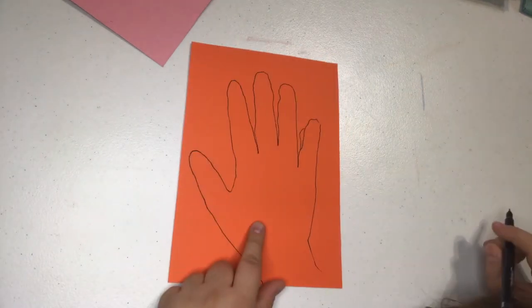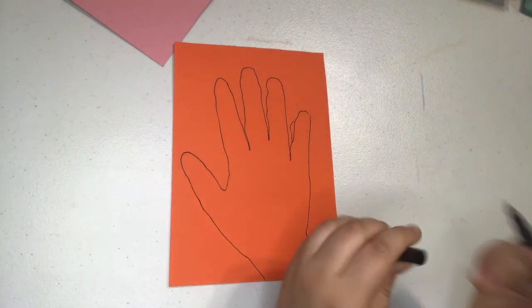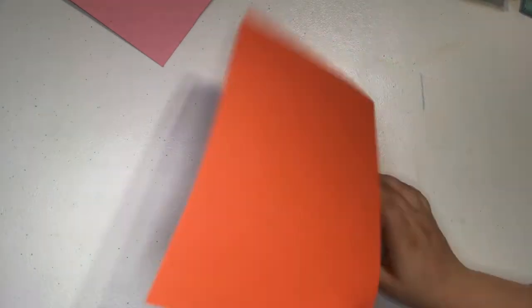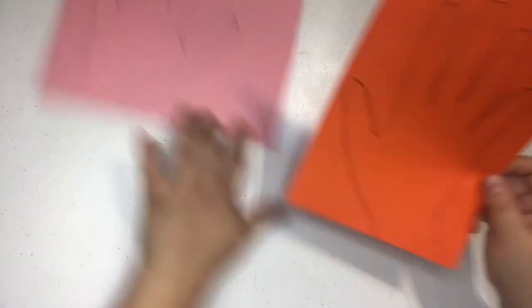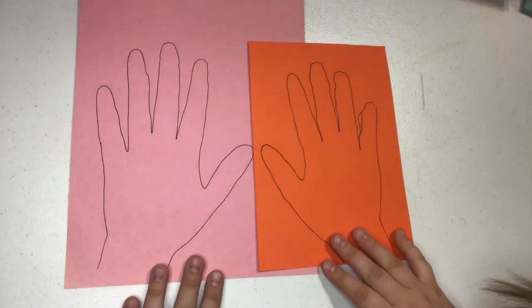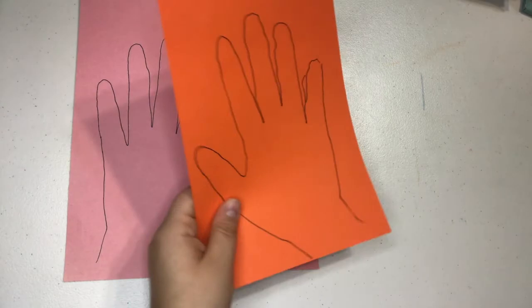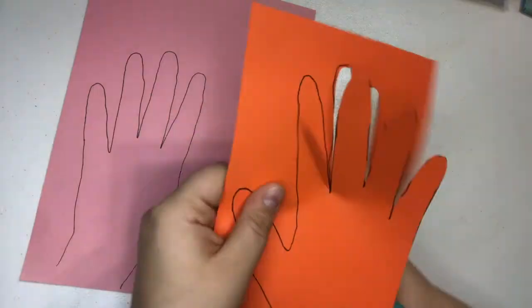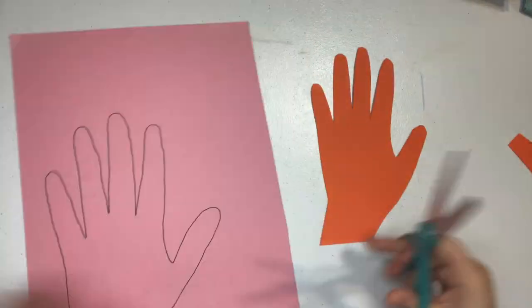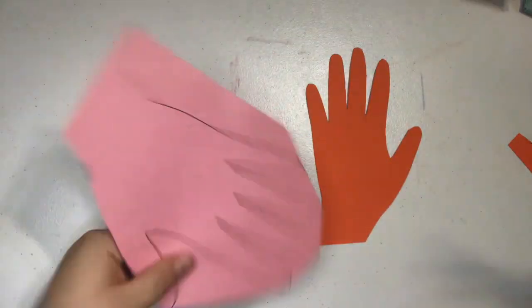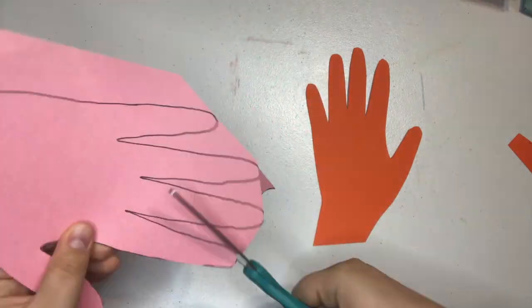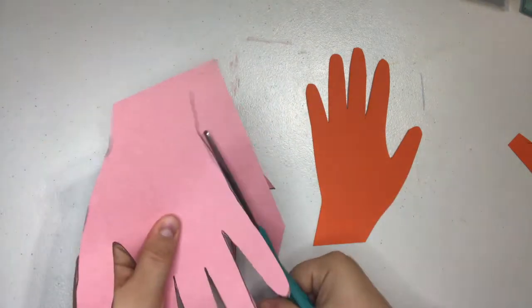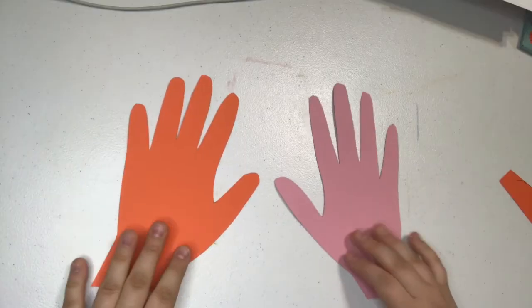Now mine turned out a little wonky because I'm not used to tracing with my left hand, and that's okay because once I cut it out I can just flip it over and use the other side. Once your hands are traced, you're going to go ahead and cut them out.